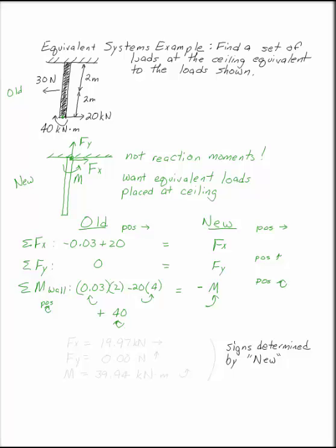So Fx equals 19.97 kilonewtons to the right, Fy is 0 kilonewtons up, and the moment from the equivalent system is 39.94 kilonewton meters counterclockwise. These signs are determined by the diagram I made for my new system. This system is equivalent to the one I had before.